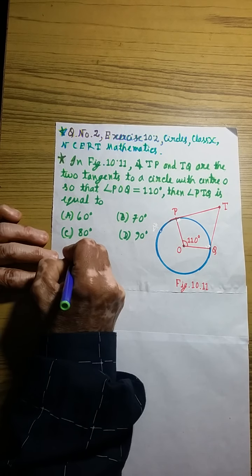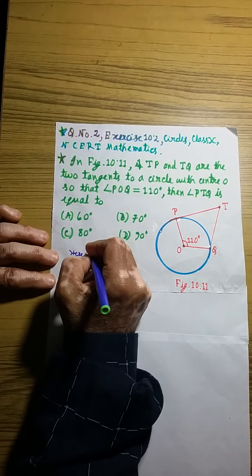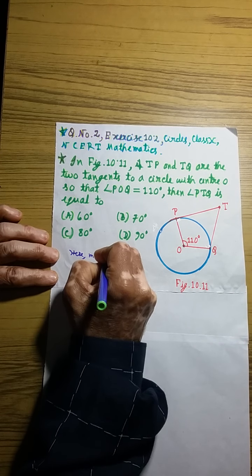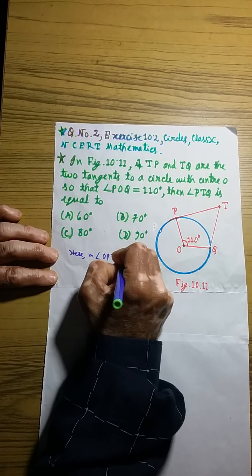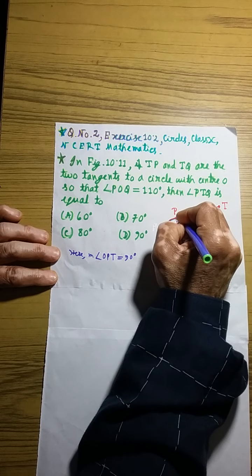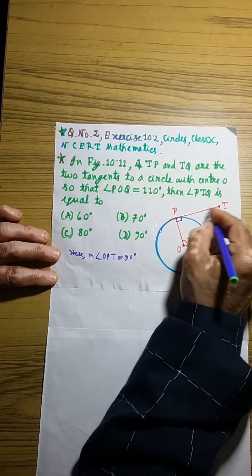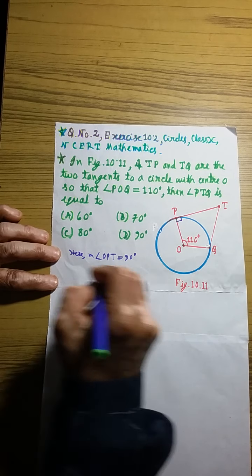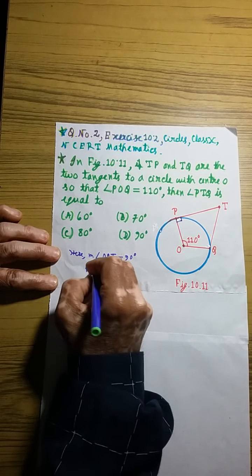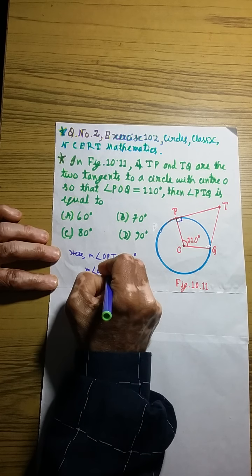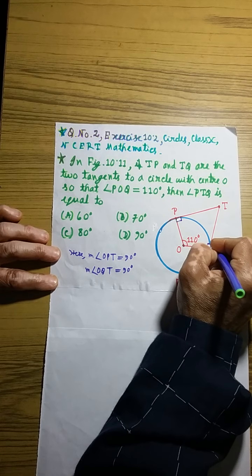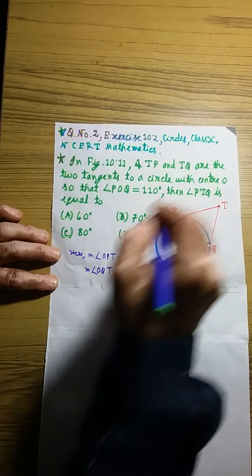So proceeding in this way: the measure of angle OPT is equal to 90 degrees, and the measure of angle OQT is equal to 90 degrees.